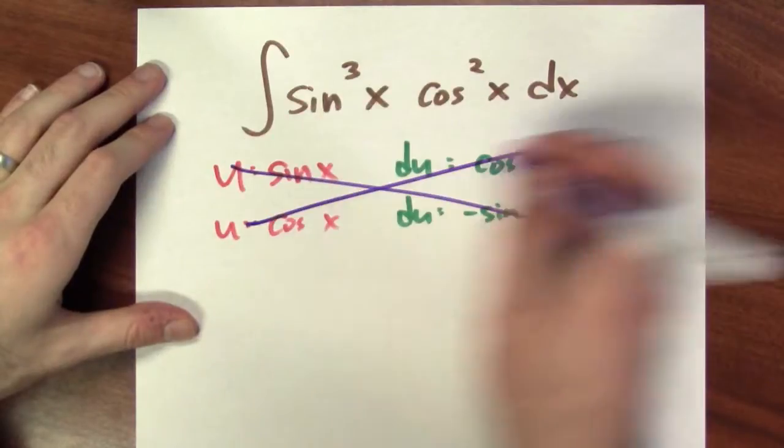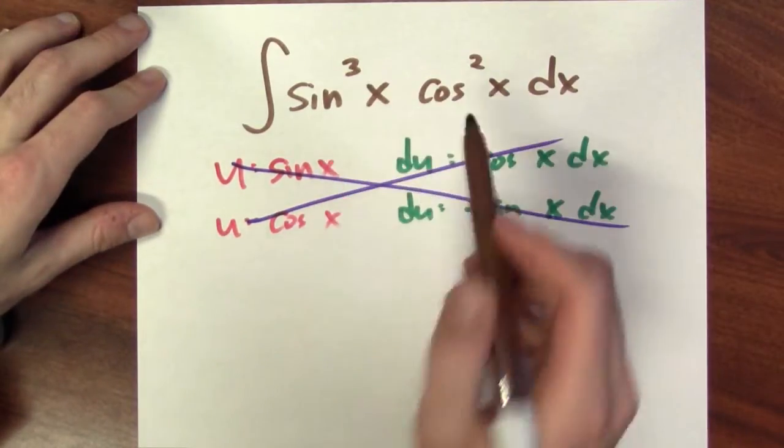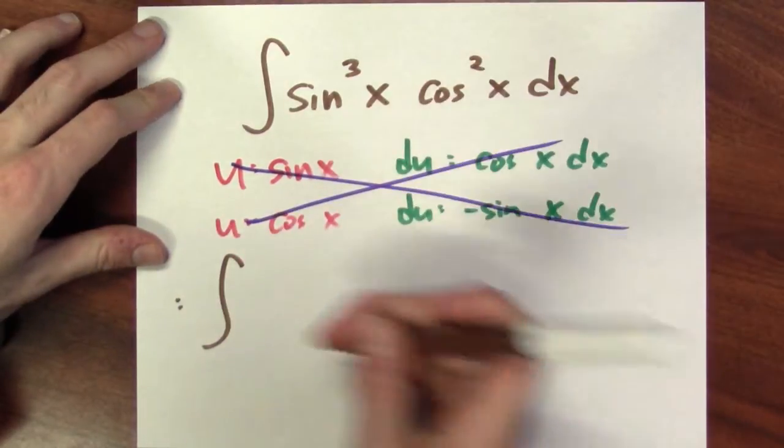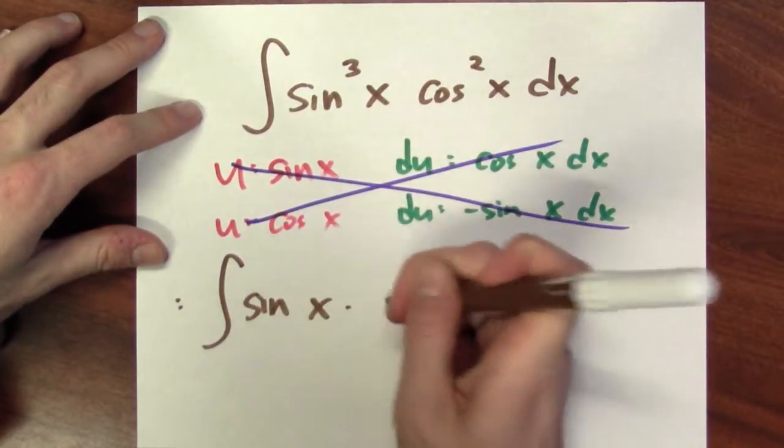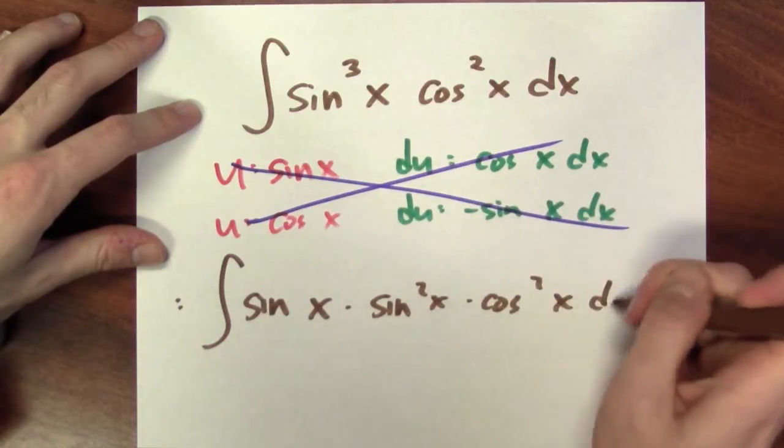So instead, I'll trade a pair of sines for a pair of cosines. Instead of making a substitution immediately, I'm going to rewrite the integrand as sine of x times sine squared of x times cosine squared of x.